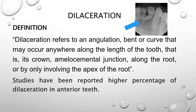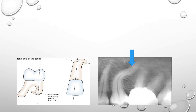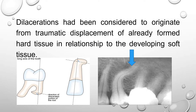Studies have reported a high percentage of dilaceration in anterior teeth. As we can see in this slide, the radiographic representation of dilaceration is pinpointed by a blue arrow, showing particularly the bending of the apex of the tooth. This is another radiographic and diagrammatic representation of dilaceration, where the blue arrow is detecting the bending of the root along the long axis of the tooth.